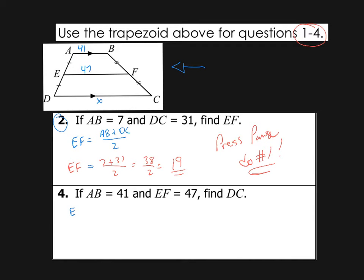So again, EF is equal to AB plus DC divided by two. In this case, the algebra changes a little bit. They gave us that EF was 47. So I'm going to say 47 is equal to AB, which they gave me as 41, plus DC, which is the part I don't know, divided by two. So now we're just going to set up a proportion and cross multiply. So we're going to cross multiply, which means multiply across. So two times 47 is going to be one times 41 plus X.